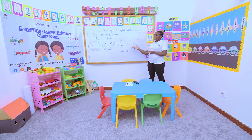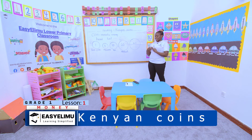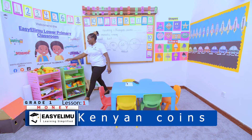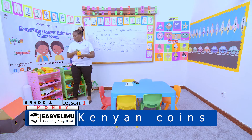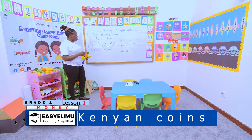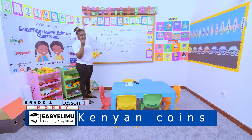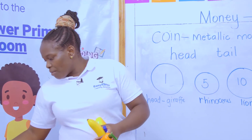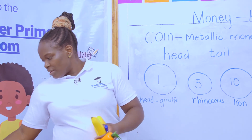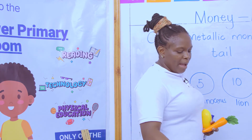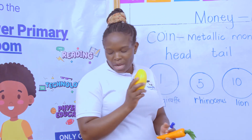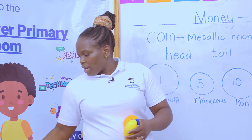When you look at these coins, which coin has the biggest value? Which coin can I go to the market with and buy a lot of things? With one shilling, I might only come back home with a sweet. With five shillings, maybe a tomato. With a 10 shilling coin, maybe a banana. With a 20 shilling coin, maybe a mango or an orange. With a 40 shilling coin, maybe a carrot and a capsicum.